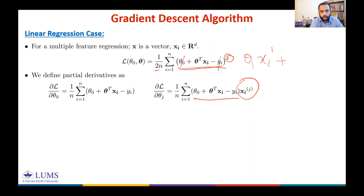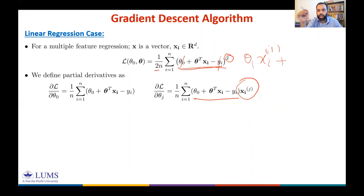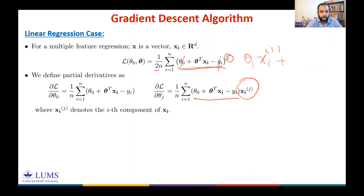This gives the j-th component of xᵢ, so the partial derivative of the loss function with respect to θⱼ includes xᵢⱼ — the j-th component of xᵢ.